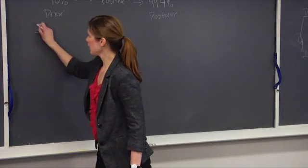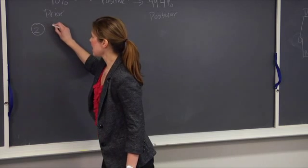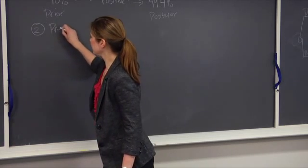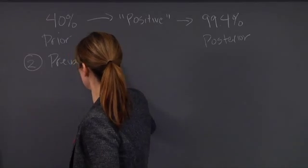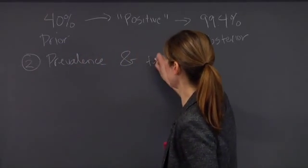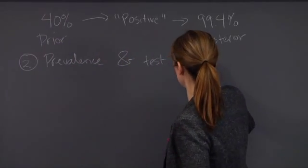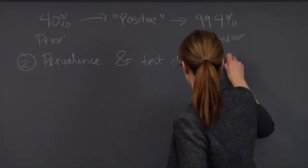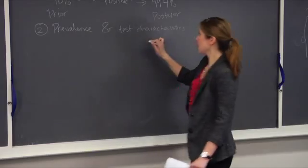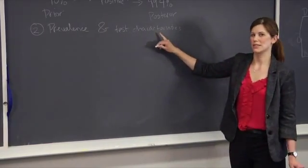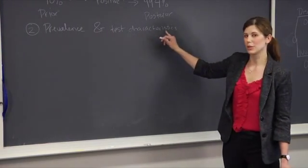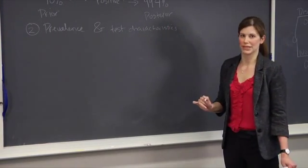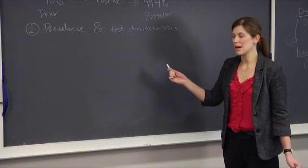So the second key takeaway of Bayesian analysis is that both background prevalence as well as the test characteristics, and by this I mean both sensitivity and specificity, matter in determining the posterior probability of having the disease. In these examples, the test characteristics were identical.